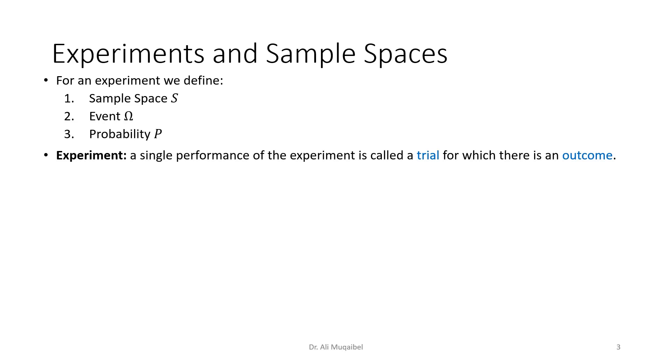We can define experiments, and any single performance of an experiment is called a trial. The new words here in the slide you'll find that they are kind of blue to distinguish from the others. So we have a trial, which is a single performance of experiment, and what comes as a result we call it the outcome.